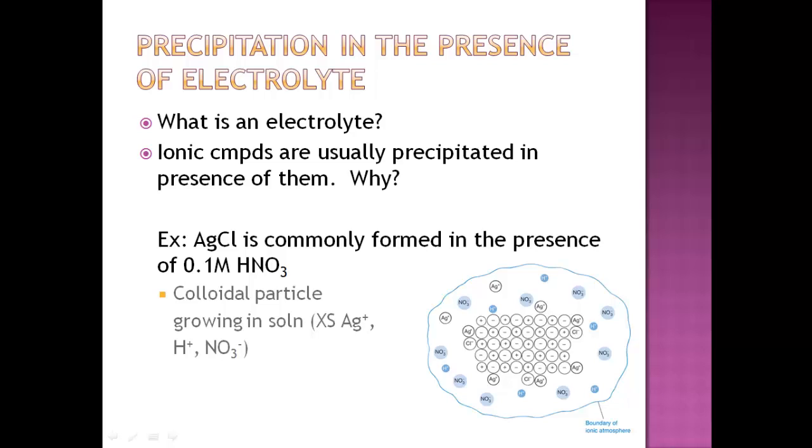To understand why ionic compounds usually precipitate in the presence of electrolytes, we have to consider how tiny crystals actually form into larger crystals. A good example of that is the picture that I'm showing you here. It's a colloidal particle growing in solution that has excess silver, silver ions, proton ions, and nitrate ions.